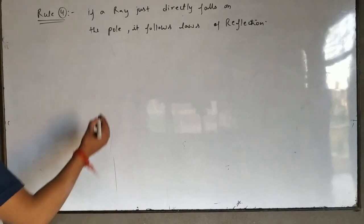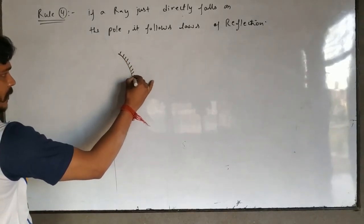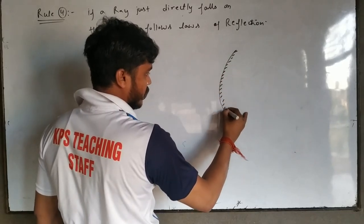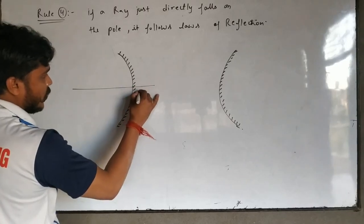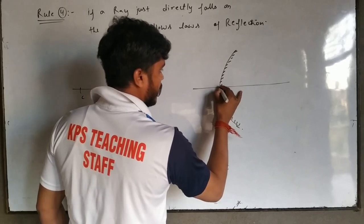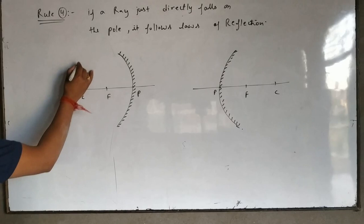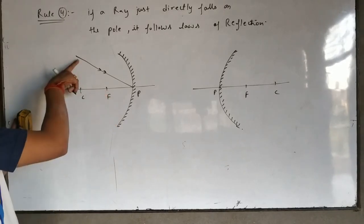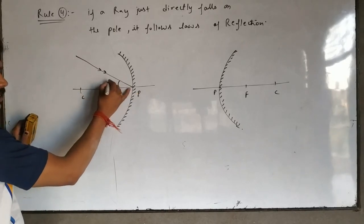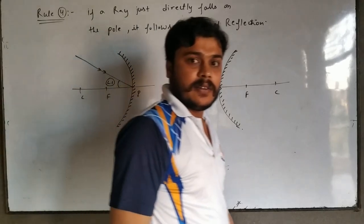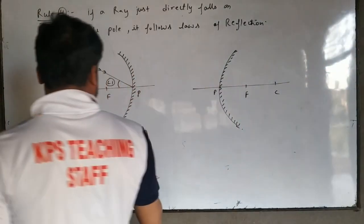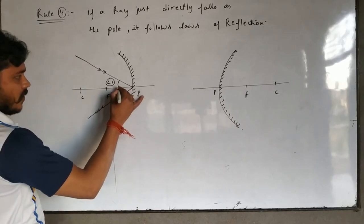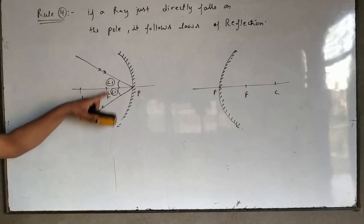Let us understand the image diagram. This is a concave mirror, with the pole, focus, and center of curvature marked. A ray falling directly on the pole — in this case, the principal axis behaves as a normal. The angle formed between the incident ray and the normal is called the angle of incidence, and the law of reflection says the angle of incidence equals the angle of reflection.